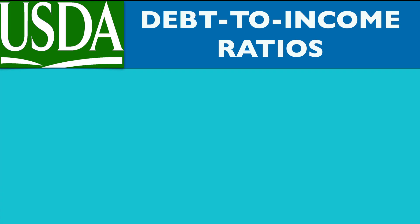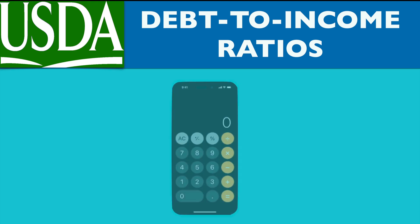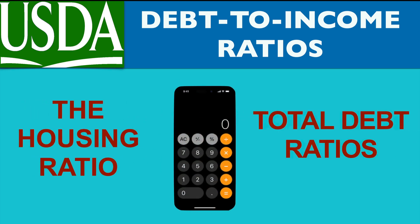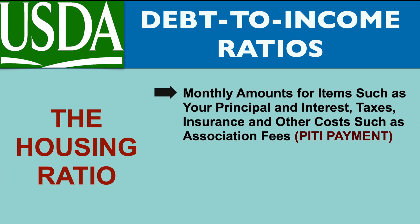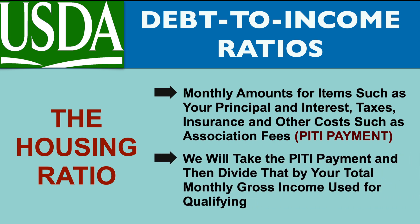USDA debt-to-income ratios are calculated in two ways: the housing ratio and your total debt ratios. The housing portion of your debt ratios includes monthly amounts for items such as your principal and interest, taxes, insurance, and other costs such as association fees. This is commonly referred to as your PITI payment. We will take the PITI payment and divide that by your total monthly gross income used for qualifying, which is also known as your repayment income.